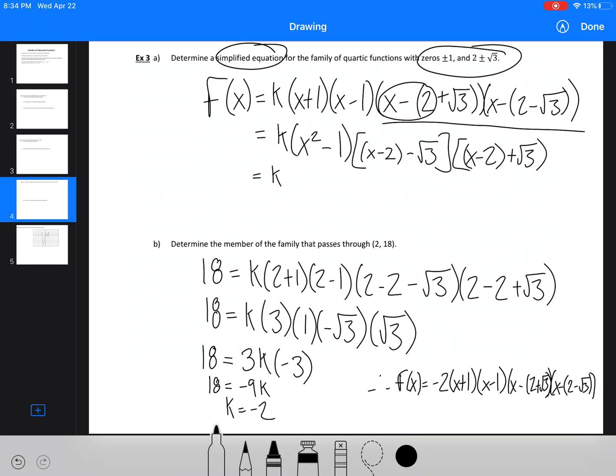So now we actually have a difference of squares at the bottom. So it's going to be k, we're going to have x squared minus 1, and then we're going to have (x minus 2) squared, and then we're going to have minus 3, because we've got the square root of 3. Well, we've got root 3 times root 3 is root 9, so it ends up being like that.